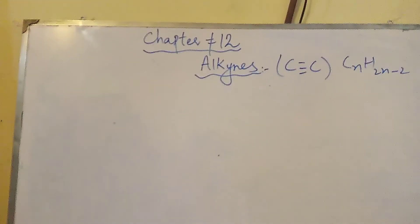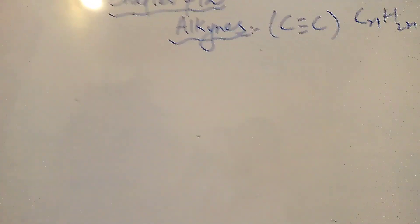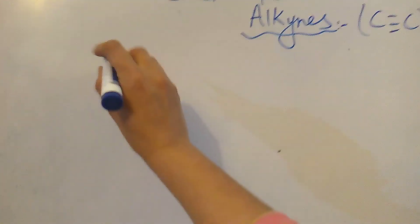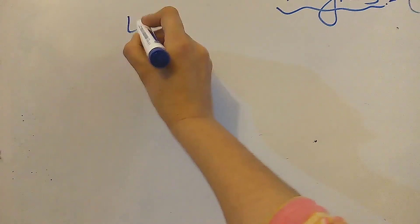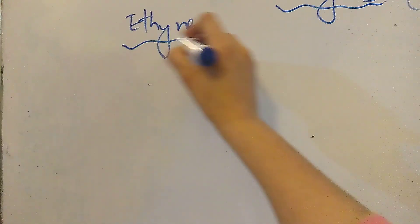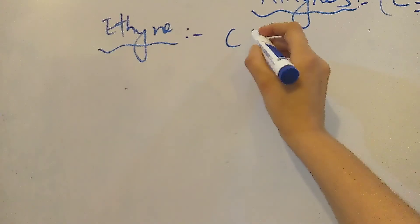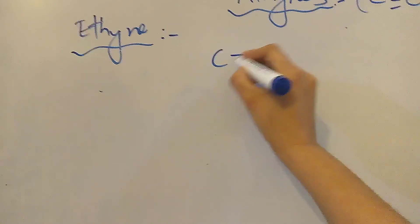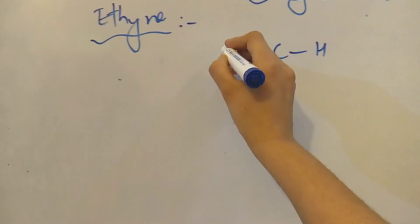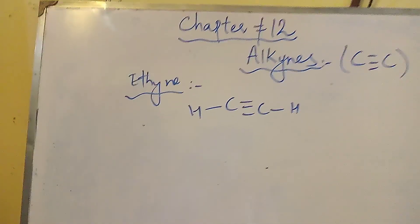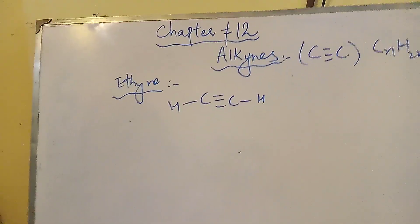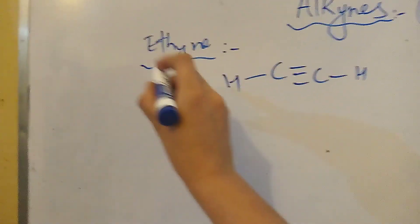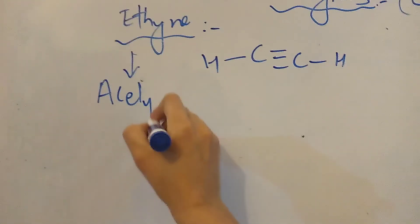Today we will study how we can draw the structure of alkynes. The simplest alkyne, which is the first member of the alkyne series, we call it ethyne. Its molecular formula is C2H2. Ethyne's common name is acetylene.